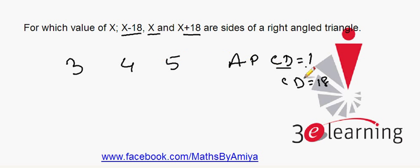With common difference of 1 we have sides 3, 4, 5. We want a right-angled triangle where the common difference is 18, so we just multiply the terms by 18.